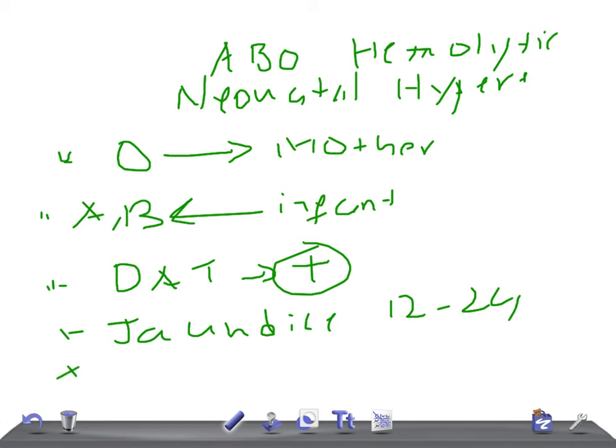On blood smear, if you see microspherocytes, remember that sometimes the direct antibody test (DAT) can be negative. However, if they are homozygous for a Gilbert syndrome mutation, that can result in ABO hemolytic disease. Thank you so much for watching this video, take care.